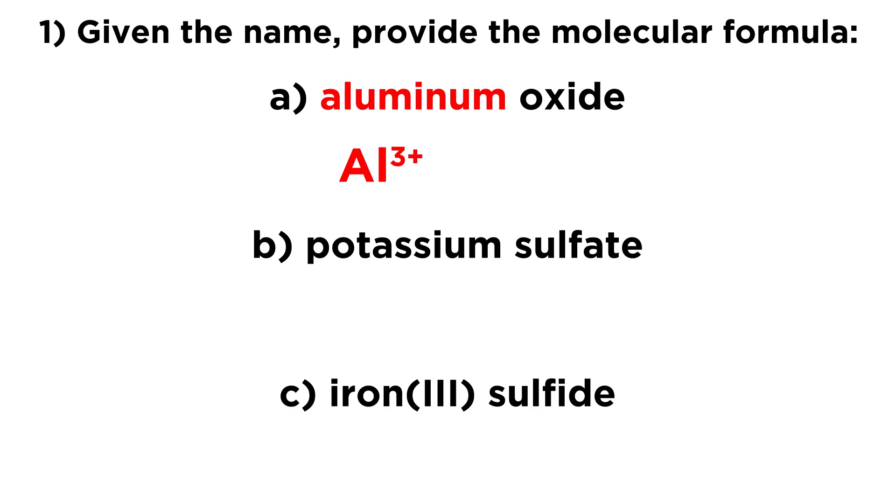And thus in aluminum oxide, we know we have Al3+. Then for oxide, we know that that is going to be O2-. The suffix '-ide', whenever we see oxide or fluoride or chloride, we know that that is an anion with noble gas electron configuration. So oxygen has to gain two electrons to attain neon electron configuration. So that is the oxide ion.